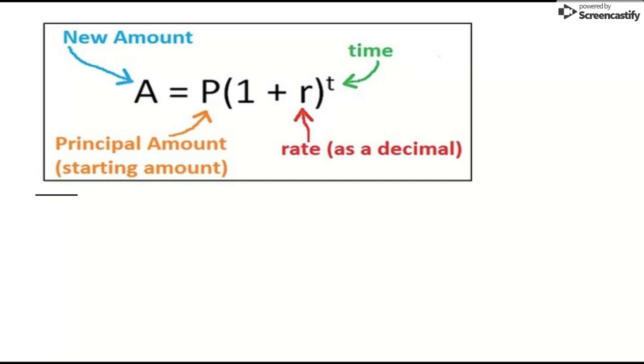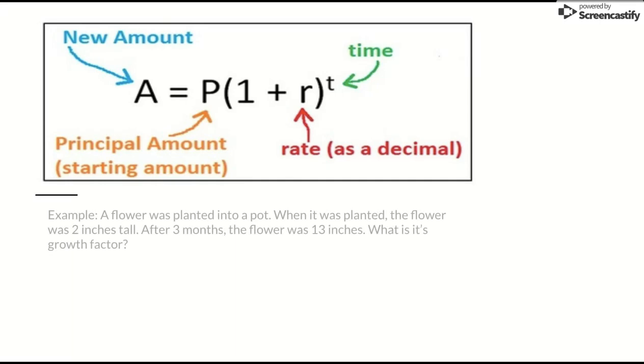Now here is the equation you would use: A equals P in parentheses 1 plus r close parentheses to the t power. So A would be your new amount, P is your principal amount or your starting amount, you have 1 plus r which is your rate as a decimal (your growth factor), to the t which is time.